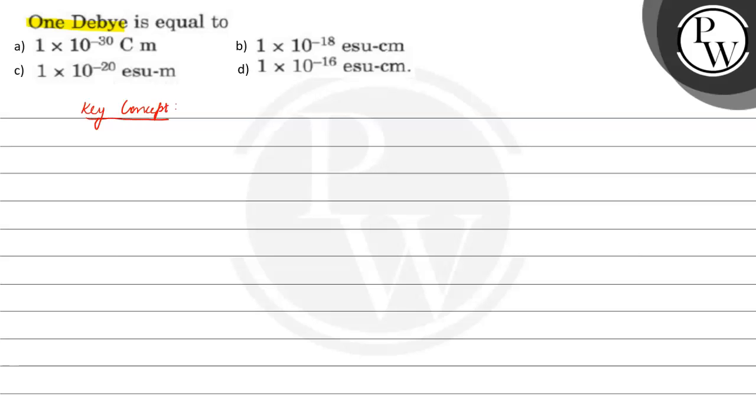The key concept behind this question is dipole moment. Debye is the CGS unit of dipole moment.